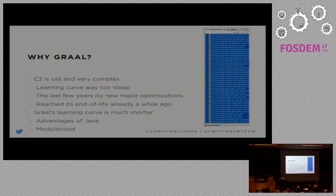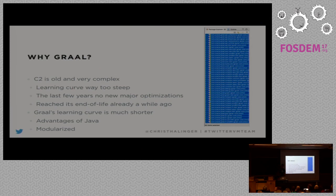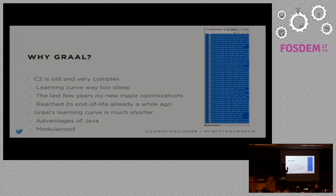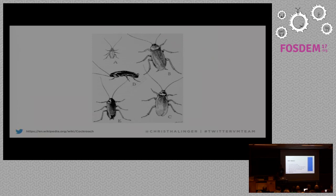In my opinion C2 has reached its end of life already. Graal's learning curve is much shorter for people who have looked at the code — you have the advantages of Java. It's highly modularized with around 83 different modules that have no circular dependencies. The build system enforces that, and there are platform-independent and platform-dependent modules for different CPU architectures.